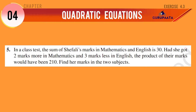In a class test, the sum of Cephali's marks in mathematics and English is 30. Had she got two marks more in mathematics and three marks less in English, the product of their marks would have been 210. Find her marks in the two subjects.